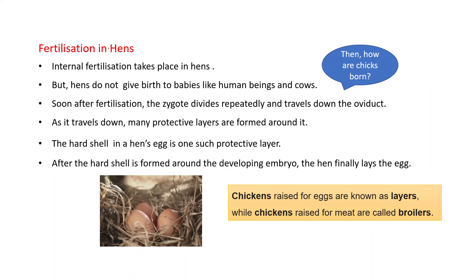Now let's come to fertilization in hens. Internal fertilization takes place in hens, but hens do not give birth to babies like human beings and cows. So how are chicks born? The young one of a hen is called a chick. If the hen does not give birth to babies like humans and cows, then how are chicks born?